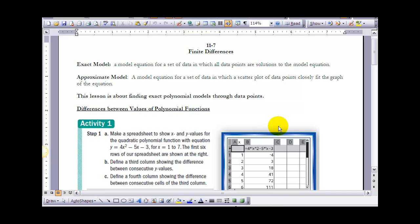There's an exact model and an approximate model. When we talk about an exact model, it's a model equation in which every data point is exactly on the graph of that particular equation. Whereas an approximate model is a model of equations such as the set of data in which a scatter plot of the data points closely fit the graph of the equation.